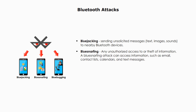The second one is called Bluesnarfing. Bluesnarfing is a type of network attack in which an attacker or hacker gains access to wireless devices through a mobile device. Once the hacker has access to the device, they can steal sensitive user information, including personal photos, contact lists, emails, and other personal data.